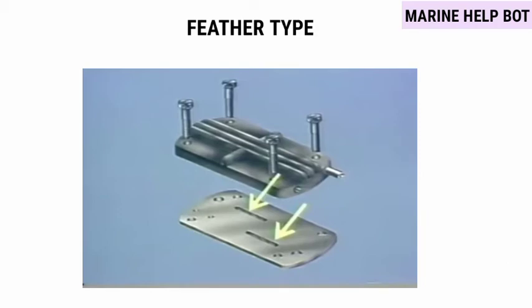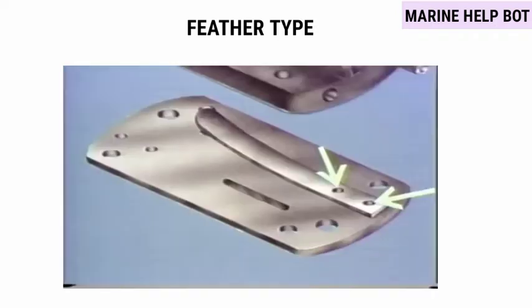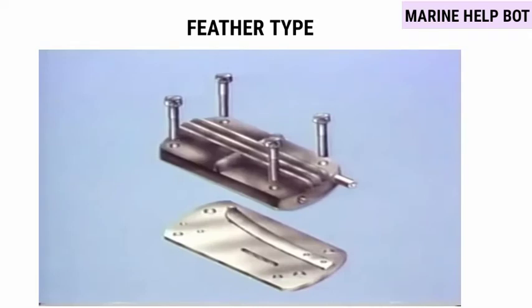In the feather type valve, suction and discharge are on a single plate. On both suction and discharge sides there is a riveted strip. The suction side valve strip is on the downside and the discharge side valve strip is on top. When suction occurs, a vacuum is created and the strip provides space to let air into the cylinder. When air is compressed, the discharge side valve strip provides space to let air go out to the receiver side.